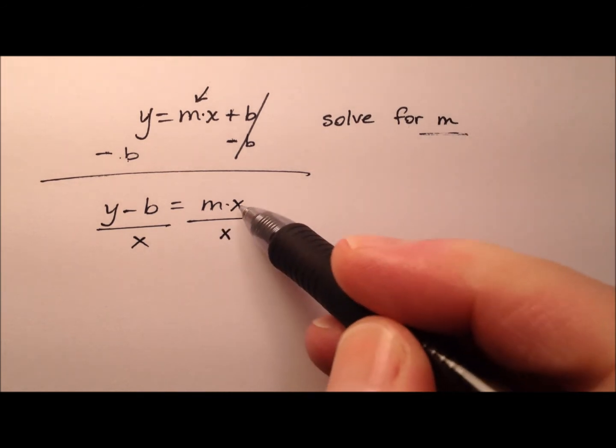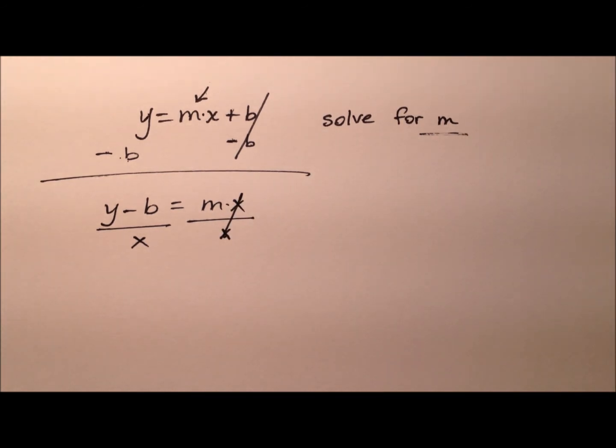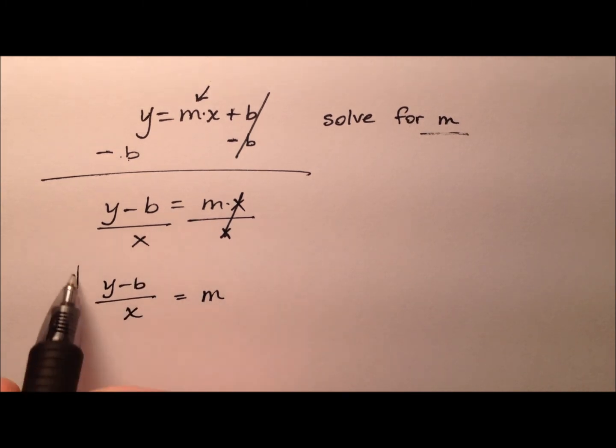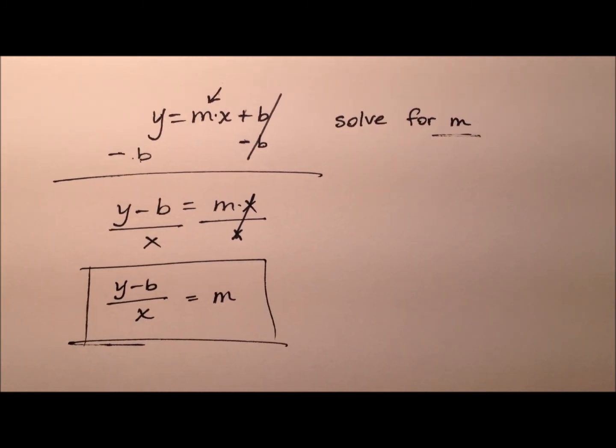And on the right side, we'll see that's nice because the x's will cancel, and that m will be all by itself. And what will the m equal? Well we have the y minus b all over that x. So we have now effectively solved for m. We got that m variable all by itself on that right side, and we see that m equals y minus b all divided by x.